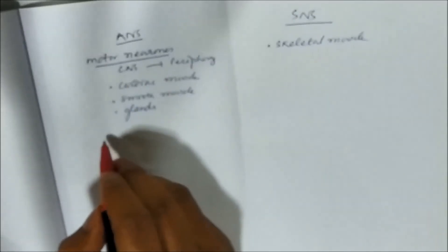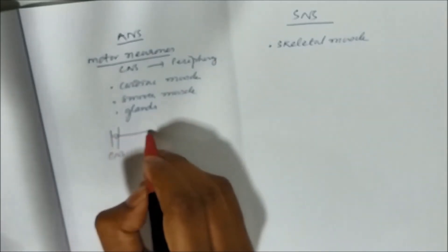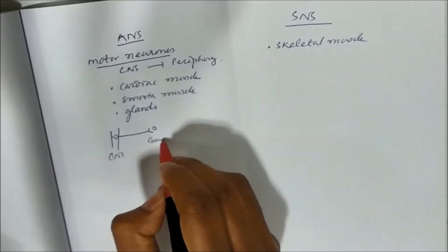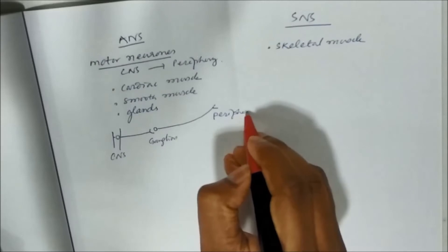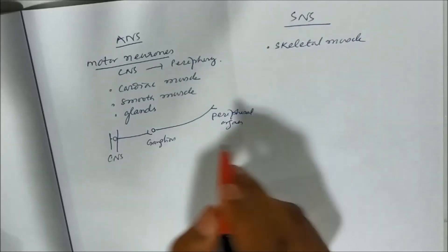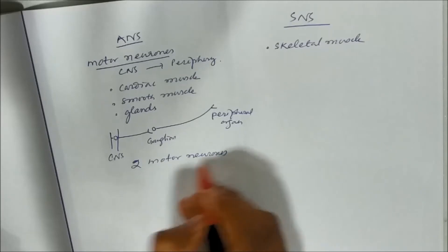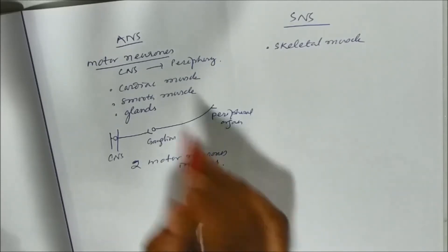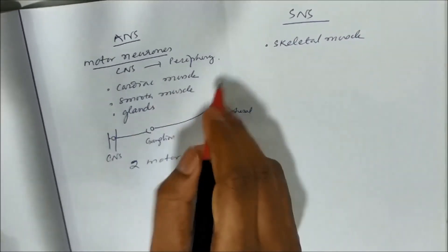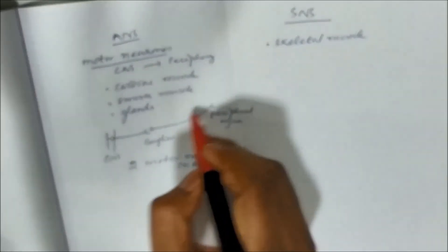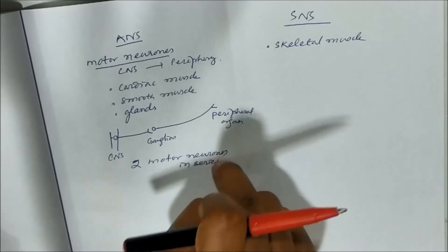And these motor neurons, another feature is, suppose from CNS, one neuron goes and then it goes to the ganglia. And from this, another neuron goes to the peripheral organ. So there are two neurons, two motor neurons in series for ANS. Whereas in sensory neurons there are multiple neurons, not two or one. Multiple numbers will be there in case of sensory neurons. But motor neurons, only two neurons in series in case of ANS.